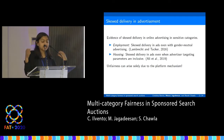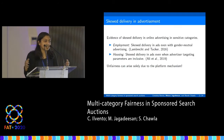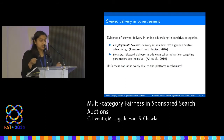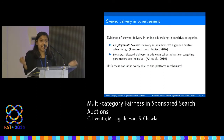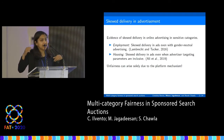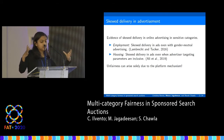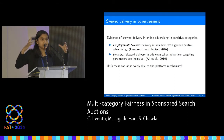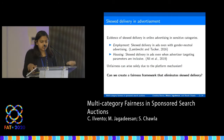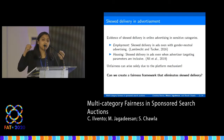As the previous talk mentioned, this can happen even when the advertiser targeting parameters are inclusive and reasonable. For example, if advertisers are gender neutral in their targeting, this can still lead to skewed delivery. While the previous talk looked at ways advertisers can adapt their bidding strategies to solve this, we look at the alternate approach of actually modifying the platform mechanism. From this perspective, unfairness arises solely because of the way the platform mechanism interacts with competition between advertisers. Our goal is to create a fairness framework that eliminates skewed delivery so that the platform mechanism is no longer injecting skew into the system.